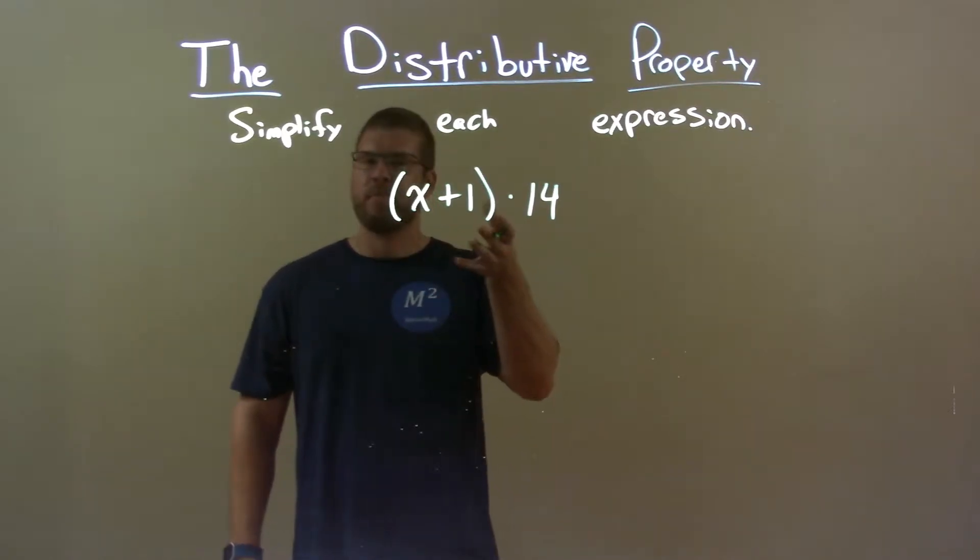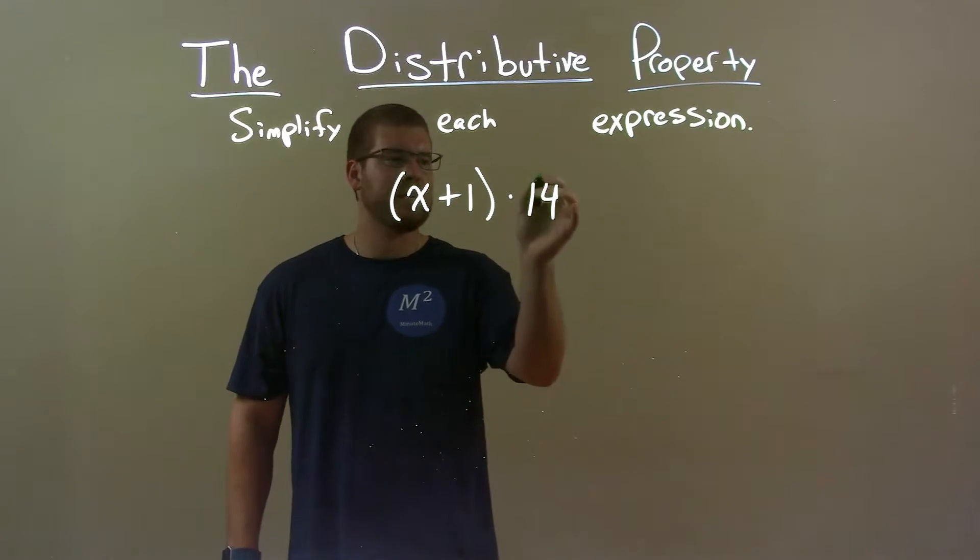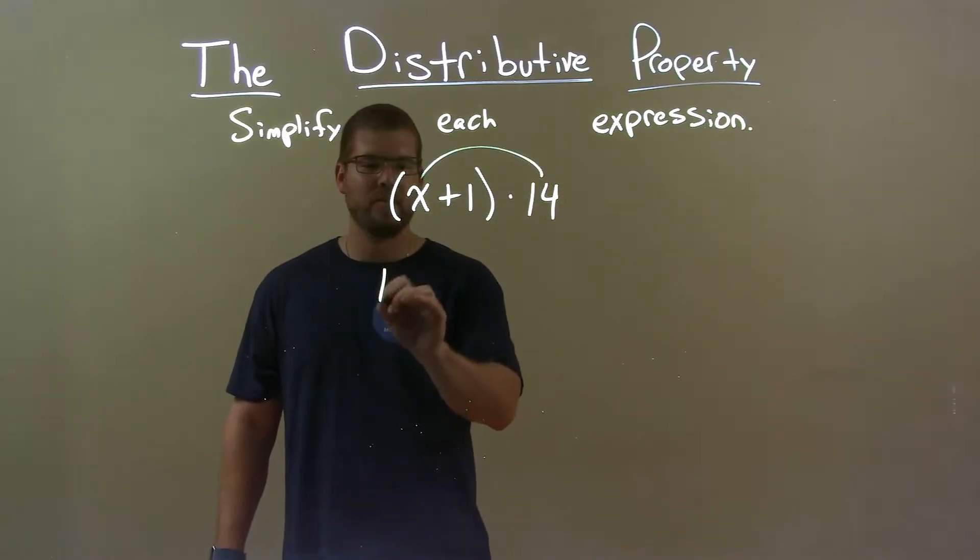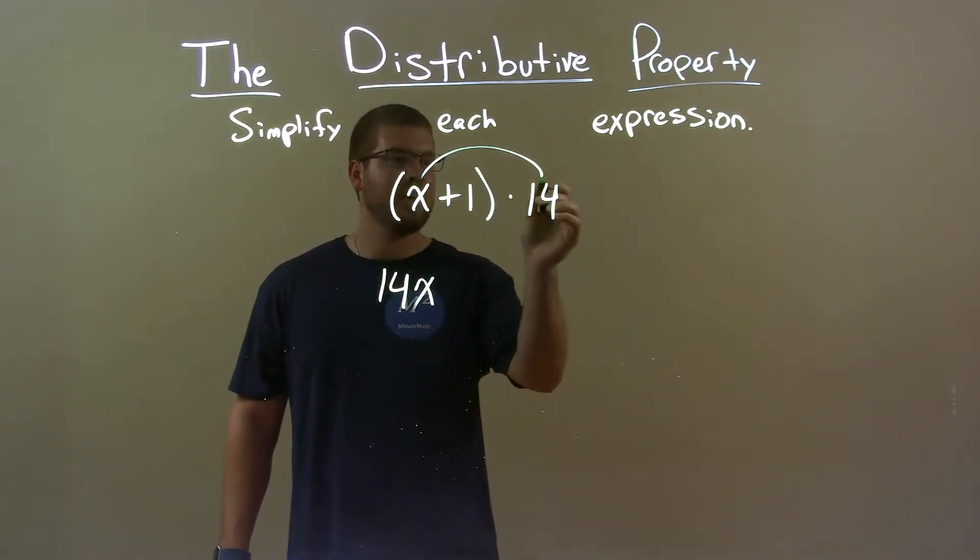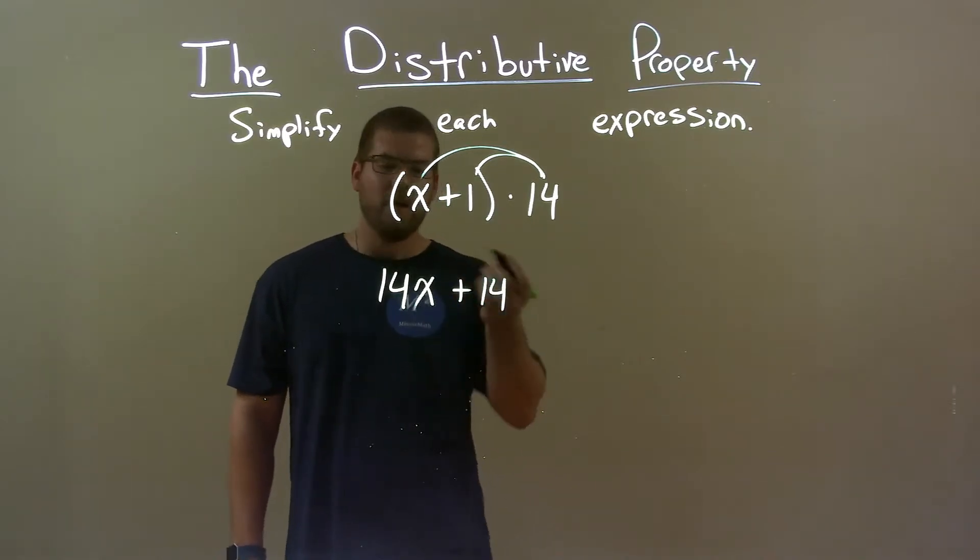Well, inside my parentheses, there's nothing that I can do to simplify this. So I need to distribute the 14. 14 times x is 14x and 14 times 1 is just 14.